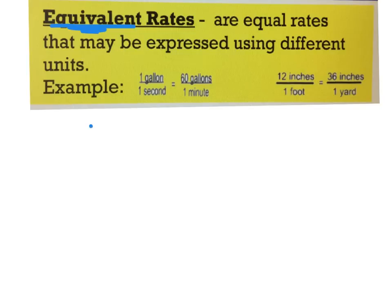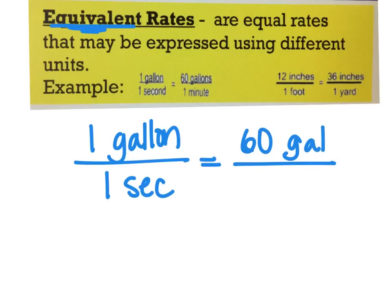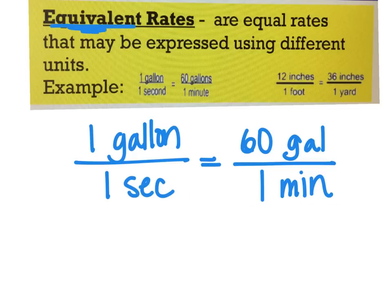Here's an example. I might say something uses one gallon in one second, and I want to know, is that equivalent or equal to 60 gallons in one minute? To figure that out, first thing I need to look at is — they both are talking about gallons, so that's good. But this one is talking about seconds and this one is talking about minutes, so I need to fix that.